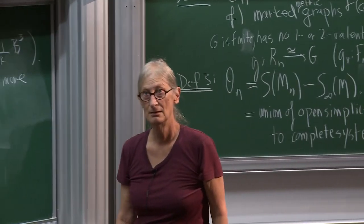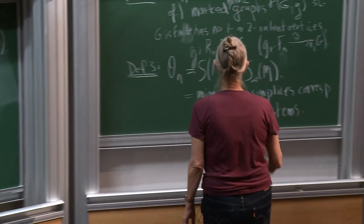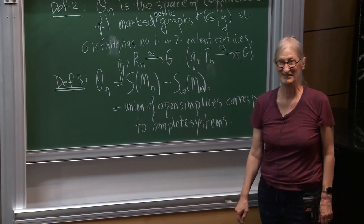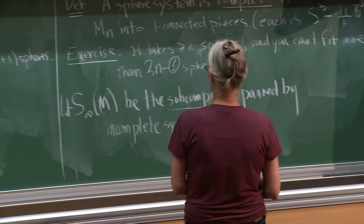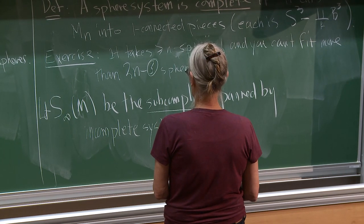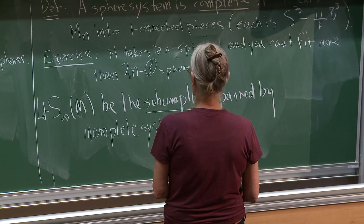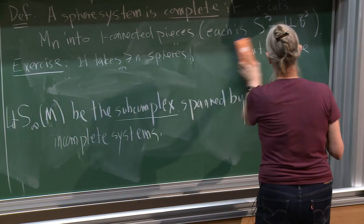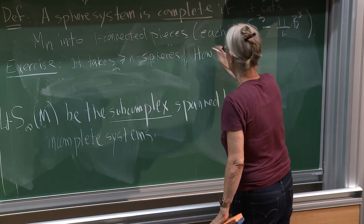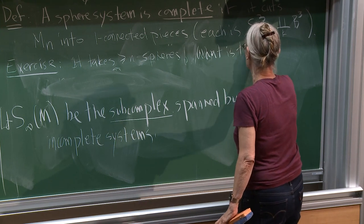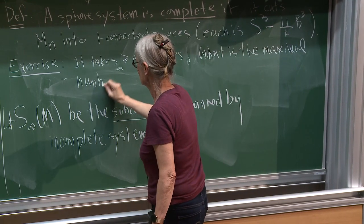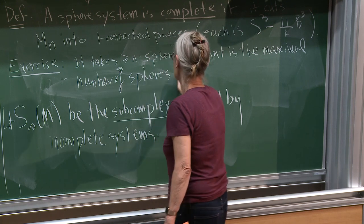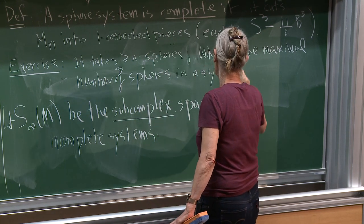Is there any particular reason why you don't call it S-infinity of Mn? Because I forgot — thank you. How do you do the exercise? Are you sure it's 2N? Like, 2N minus 3? It's 2N. Exercise: how many spheres can you fit in? What is the maximal number? I think that's on the exercise sheet.